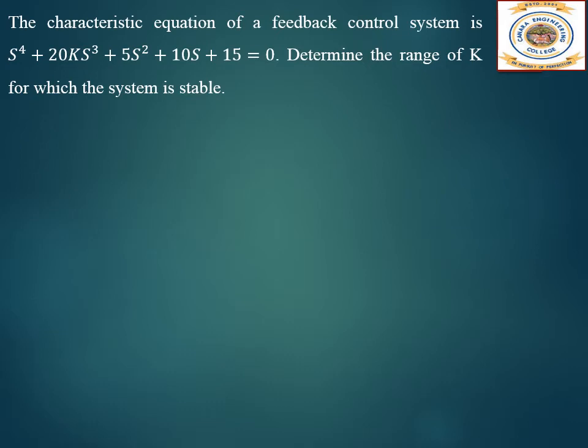The next question: the characteristic equation of a feedback control system is s⁴ + 20ks³ + 5s² + 10s + 15 = 0. Determine the range of k for which the system is stable. First, construct the Routh array.